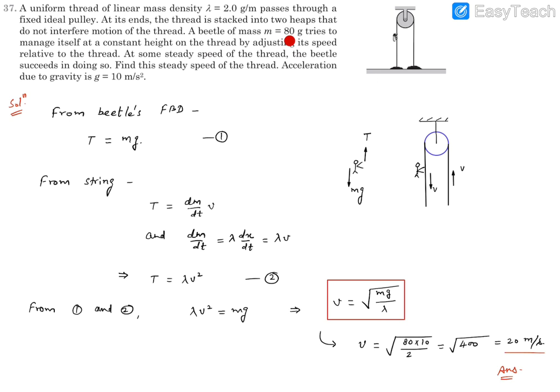Now you have been given m as 80 gram, lambda is 2. Then we can substitute over here. I have placed directly because this is 80 gram and lambda is 2 gram per meter. So gram and gram will get cancelled out and everything will be in meter per second. So answer will come out as 2 meter per second.